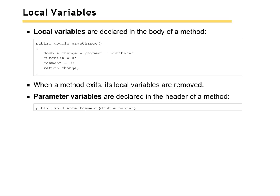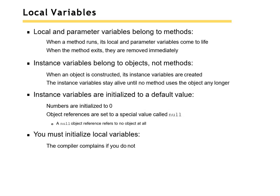Local variables are not the same as instance variables. A local variable is declared in the body of a method, and when the method exits the local variables are gone. Parameter variables are declared in the header and they are also not the same as local variables. Local and parameter variables belong to methods — when a method runs they come to life, and when the method exits they're destroyed. Instance variables belong to objects, not methods. When an object is constructed its instance variables are created and they stay alive until no method uses the object. Instance variables are always initialized to a default value: numbers are initialized to zero and object references are set to null. You must initialize all local variables or you'll get an error.